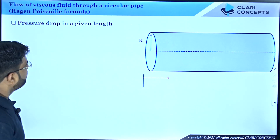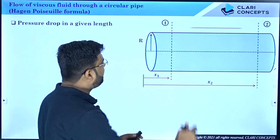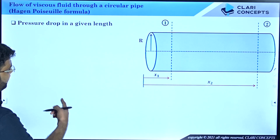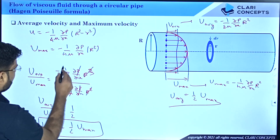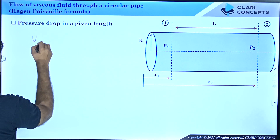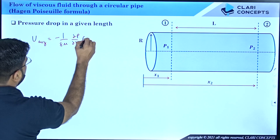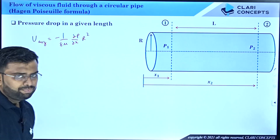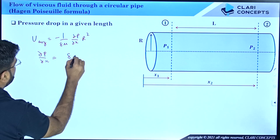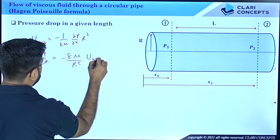Now we will derive the pressure drop formula. We have U_average = −(1/8μ)(∂P/∂x) × R². Rearranging for ∂P/∂x: ∂P/∂x = −8μ U_average / R². We need to find P1 − P2 over a length L from section 1 to section 2.